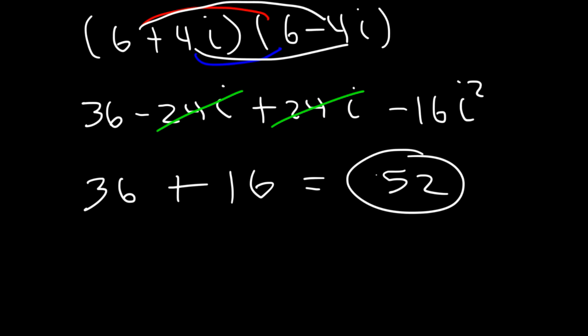So 36 plus 16 is 52. When you multiply a complex number by its conjugate, you get a real number — the imaginary numbers will disappear.